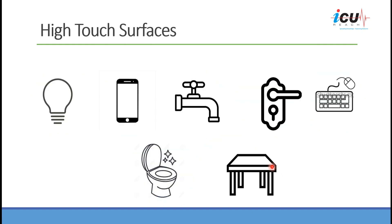High-touch surfaces that need to be cleaned frequently include — these are only examples — light switches, phones, faucets, door handles, keyboards and mice, bathrooms, tables, and side tables. Identify the areas commonly touched in your house and clean them frequently.